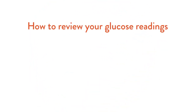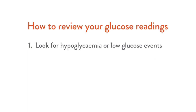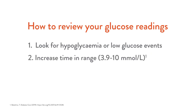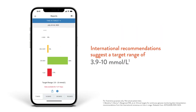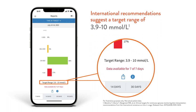Let's start by reviewing your glucose readings. First, you want to look for hypoglycemia or low glucose events. Second, you want to increase your time in range. Third, you want to reduce your glucose variability — those up and down waves. Set your target range based on guidance from your healthcare professional.